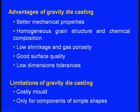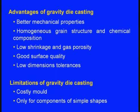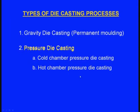Limitations of gravity die casting: one is the costly mould. Making this mould is not easy or cheap — the material is costly and we use special alloys. The alloy can be tough to machine and may require advanced machining processes that are expensive, difficult, laborious, and time consuming. Also, only components of simple shapes can be produced — complex shapes cannot be obtained using the permanent moulding process.